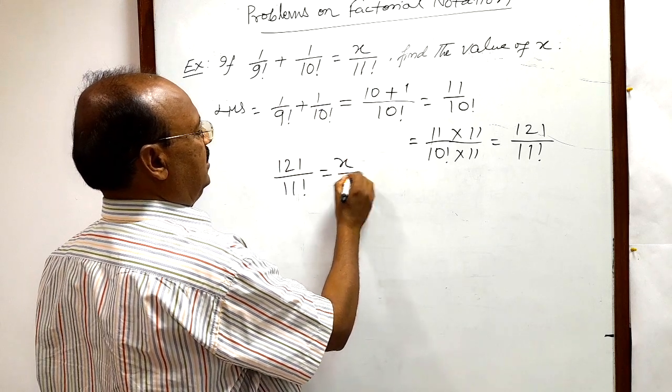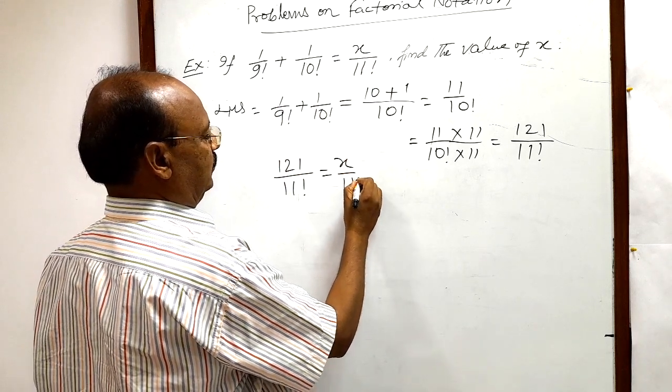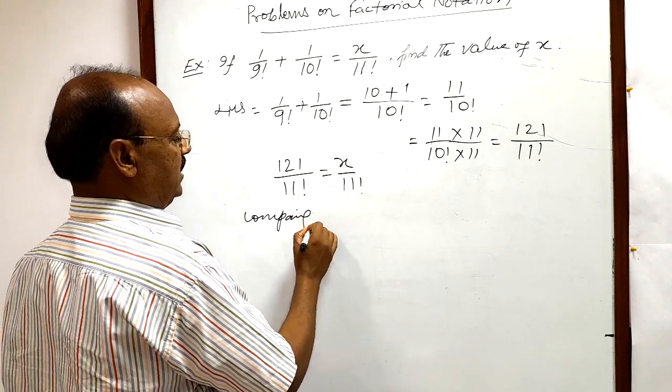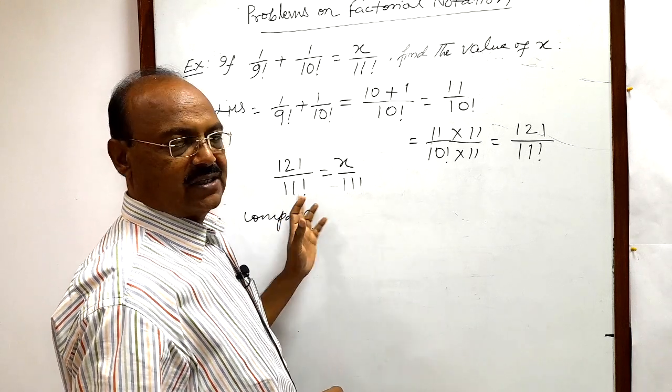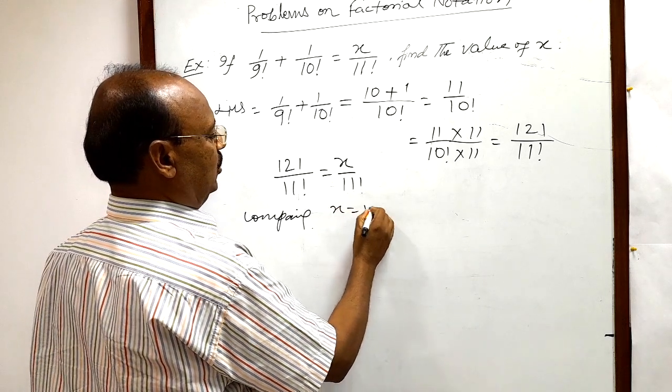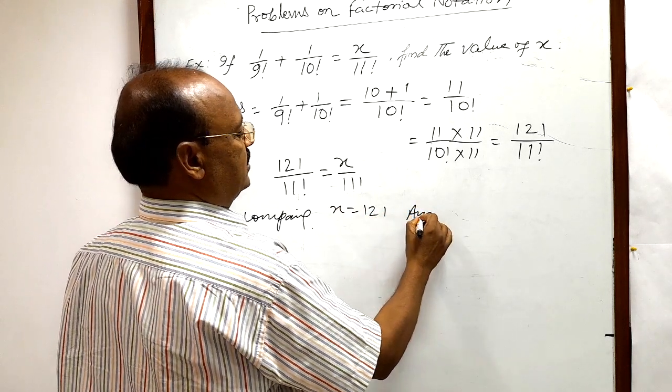X by 11 factorial. So by comparing both sides, denominators are same 11 factorial, so naturally x will be how much, 121. This is the answer.